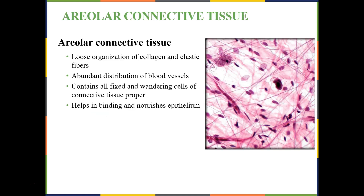Here's areolar connective tissue. It has collagen fibers as well as elastic fibers, and it has a great blood supply. There are macrophages, mesenchymal cells, fibroblasts, and adipose cells. The major function of areolar connective tissue is to help in binding epithelium and to nourish the basement membrane of all of our epithelial tissues. So anywhere you find epithelial tissue, you're going to have areolar connective tissue as well.